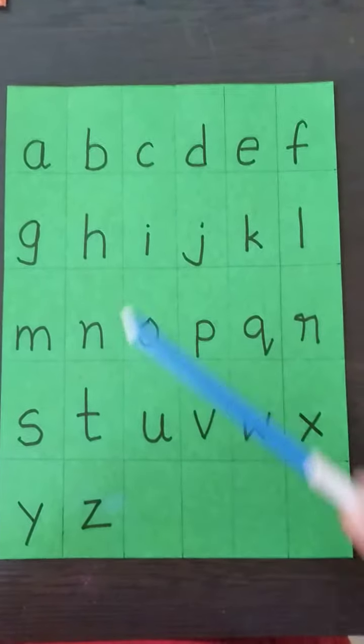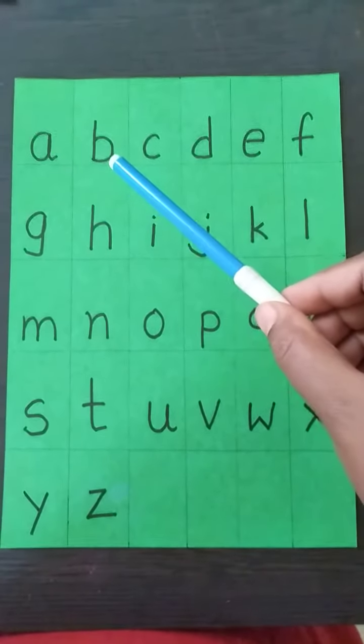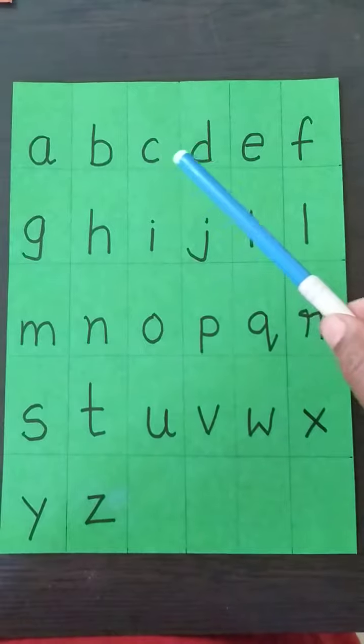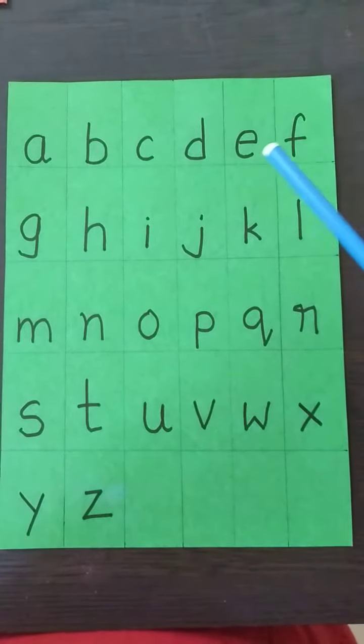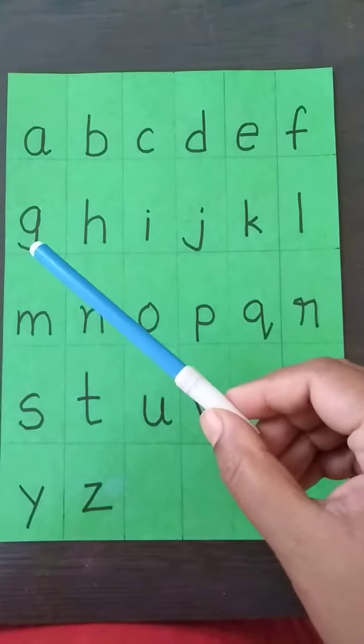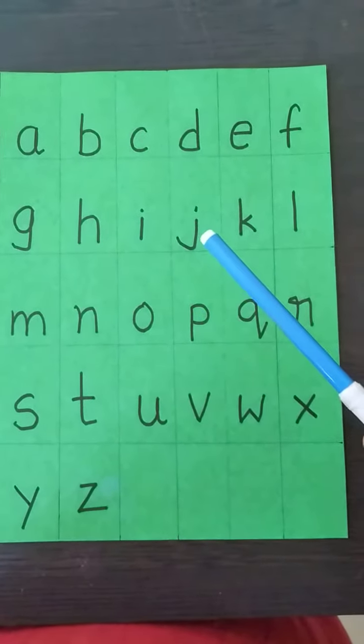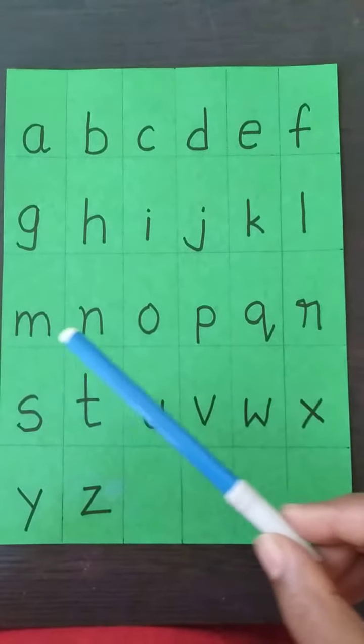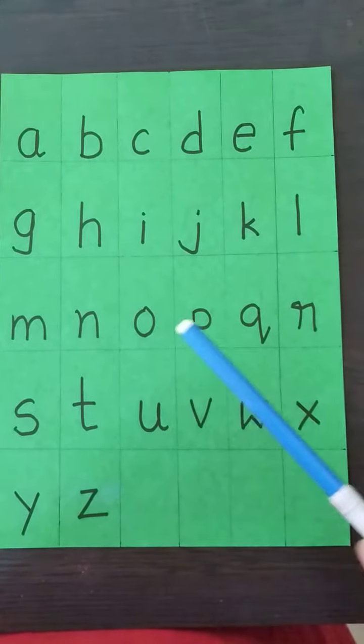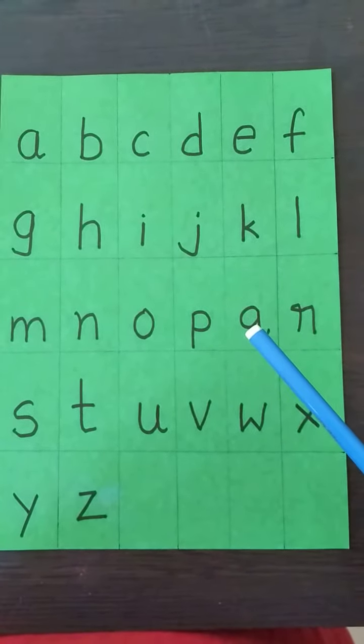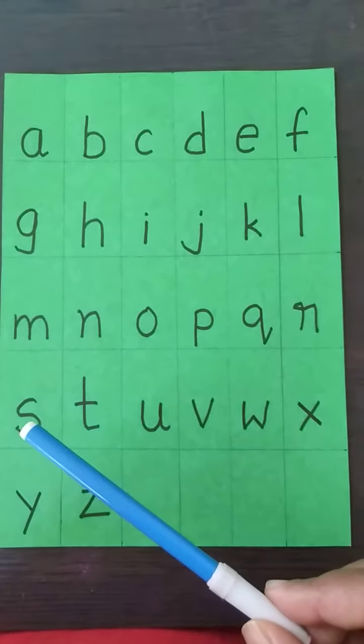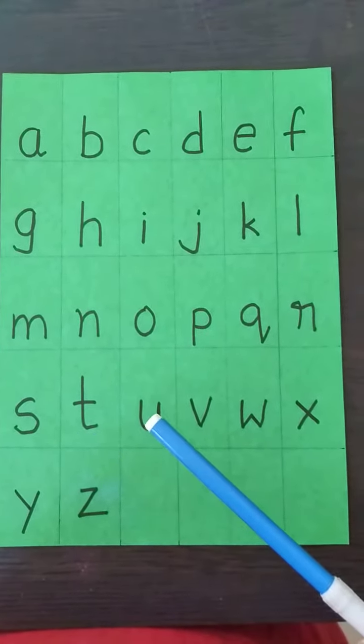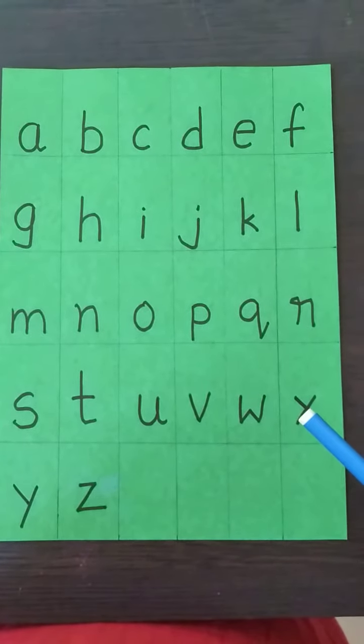Shall we repeat one more time? A, B, K, D, F, G, H, I, J, K, L, M, N, O, P, Q, R, S, T, A, V, W, X.